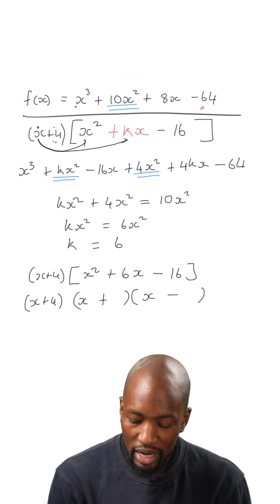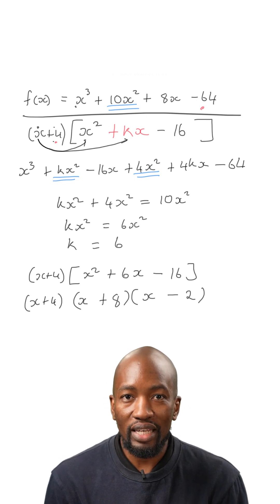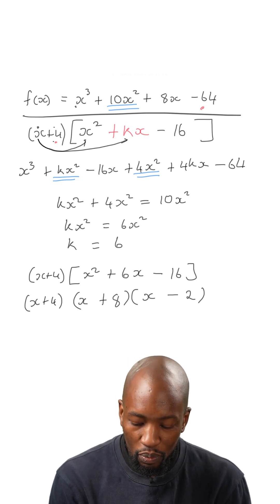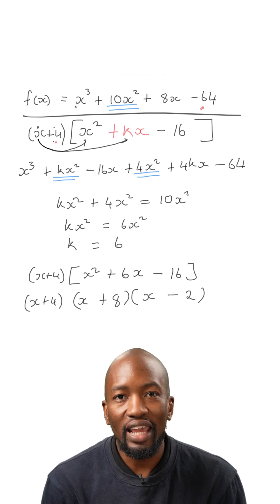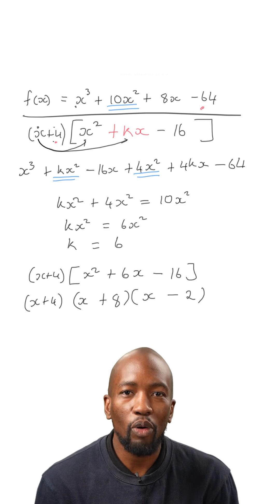And those two numbers can be 2 and 8. Now which means that our factors are actually x plus 4, x plus 8, and x minus 2. And there you have it guys. That is how you factorize a cubic polynomial.